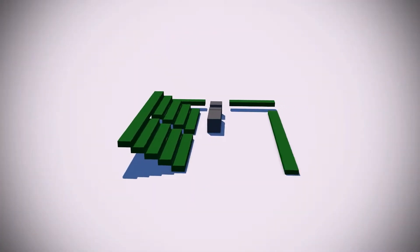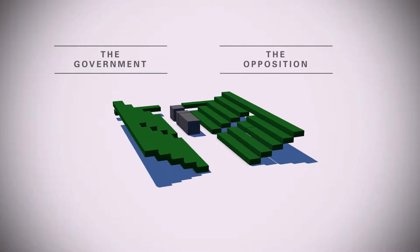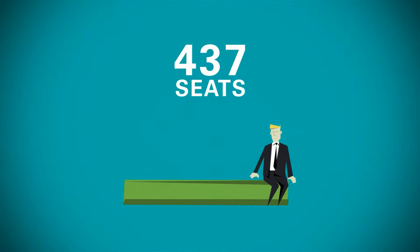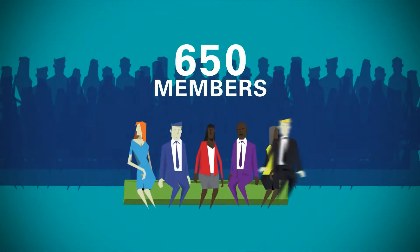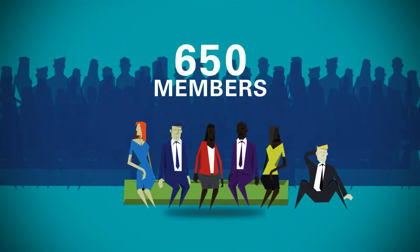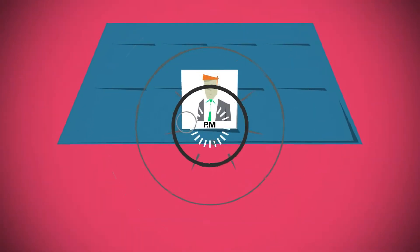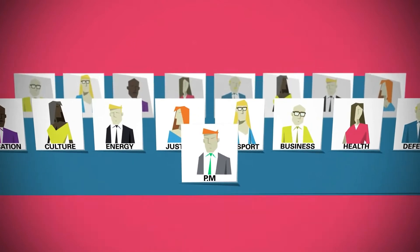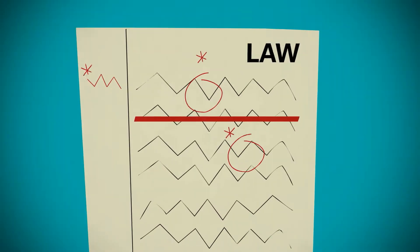Inside the House of Commons there are two sides. On one side the government, who run the country, and on the other side the opposition, who keep an eye on what the government are doing. The chamber only has 437 seats for over 600 members, so MPs have to pack in for big debates. The Commons speaker sits at the head of the room to maintain order. The prime minister leads the government and appoints ministers to form a cabinet, seen on the front bench.